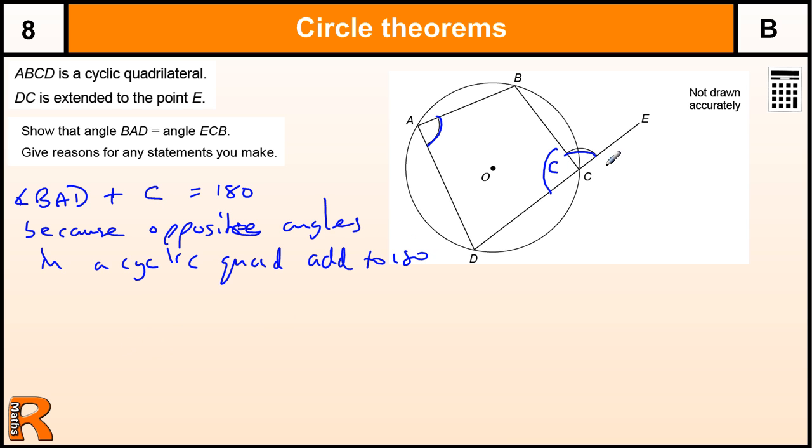And also the angle ECB plus C is 180 because they make a straight line.